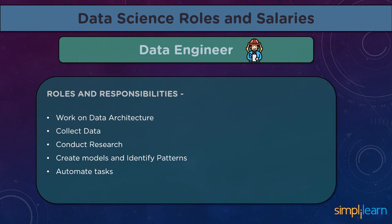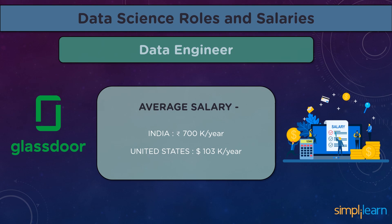Talking about a Data Engineer's roles and responsibilities, they are expected to perform the following duties. Work on Data Architecture — they use a systematic approach to plan, create and maintain data architectures while keeping them aligned with business requirements. Collect Data — they have to obtain data from the right sources before initiating any database work. Researching to address any issues that can arise while tackling a business problem. Create models and identify patterns, and finally automate tasks. According to Glassdoor, in India a Data Engineer can earn approximately 7 lakh rupees per annum, and in the United States approximately 103,000 dollars per annum.